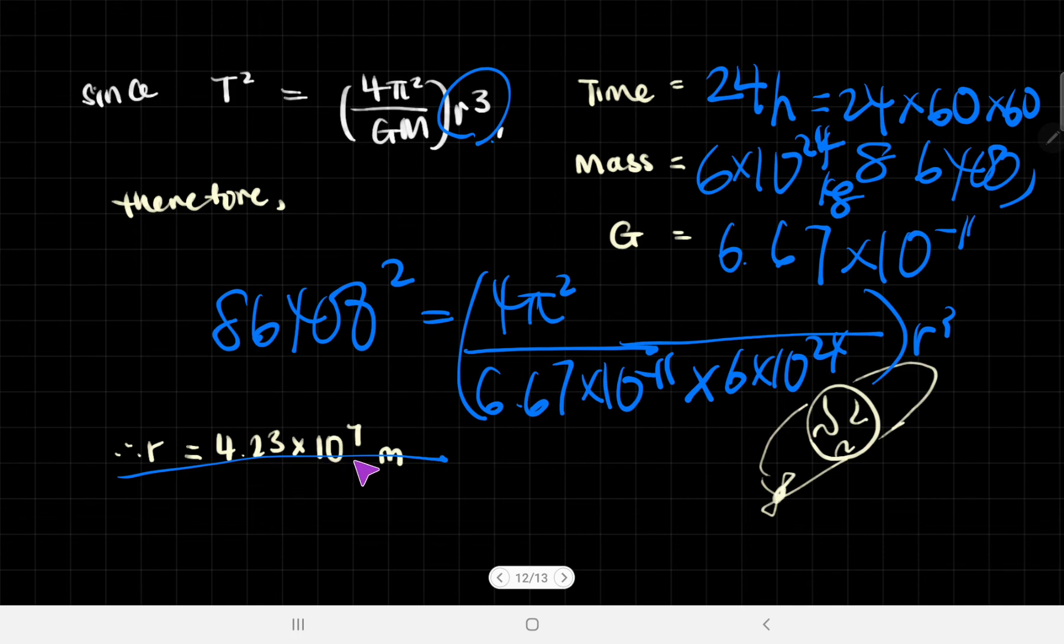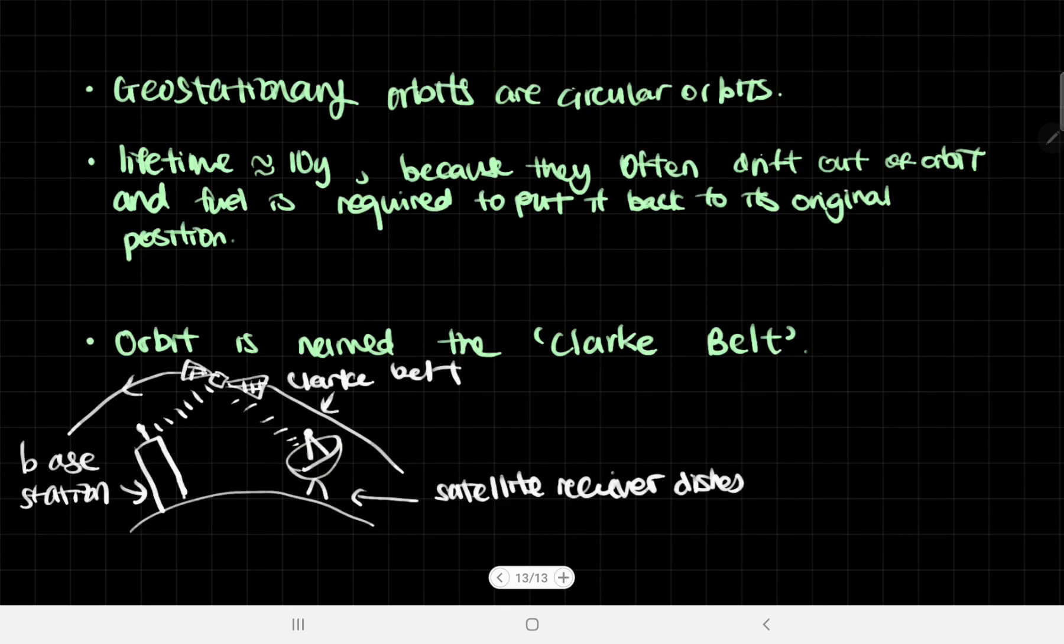For reference, Earth's radius is 6.4×10⁶ meters. We're looking at 4.23×10⁷ m, which is much, much bigger. 6.4×10⁶ versus 4.23×10⁷, so it's much bigger. If we look at it, it would look probably something like this - it's actually orbiting really far away from us.